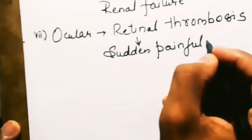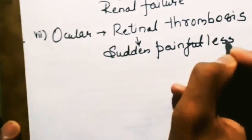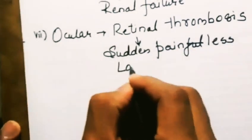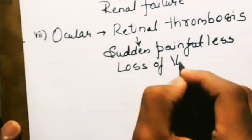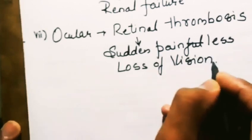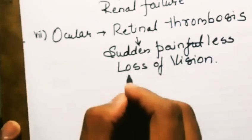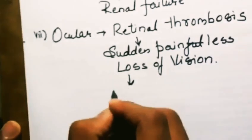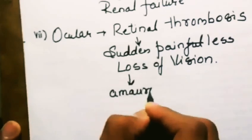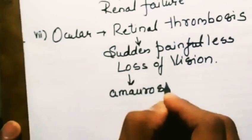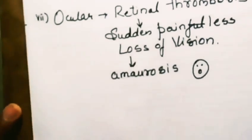Retinal thrombosis generally causes painless loss of vision, and it may also lead to amaurosis fugax.